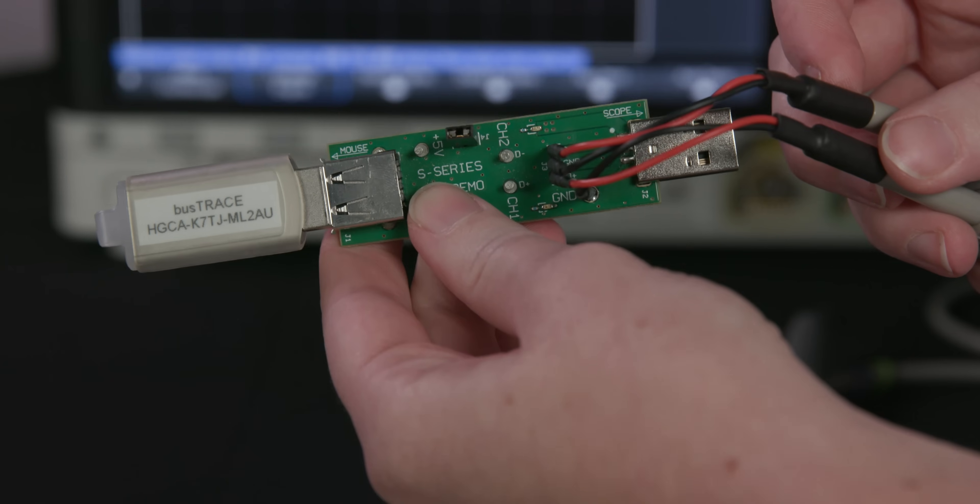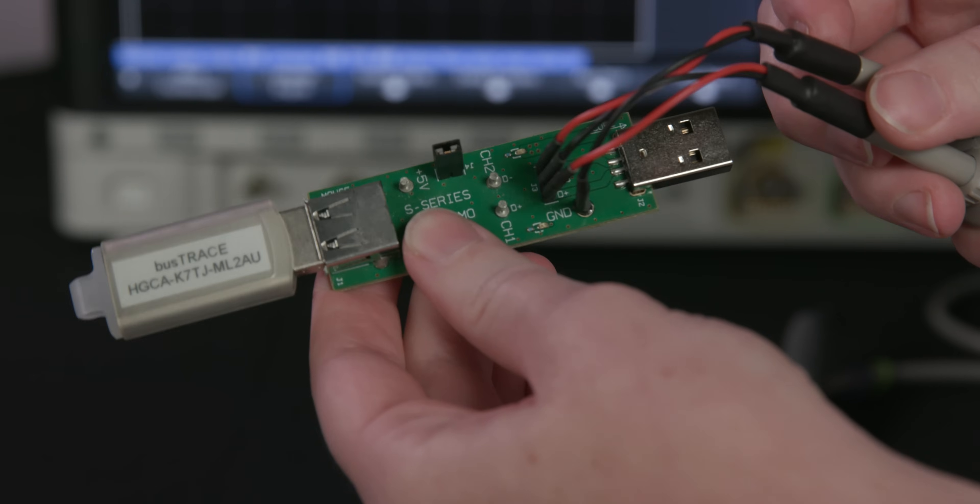But you can also measure single-ended signals with your differential probe. Simply connect one probe lead to your signal and one to ground, and you can take advantage of that performance boost of your differential probe.